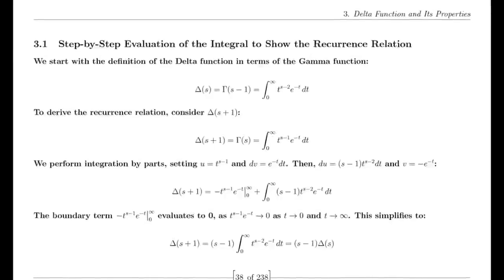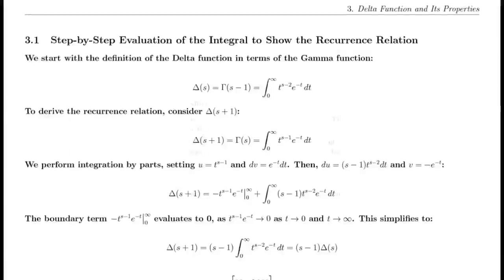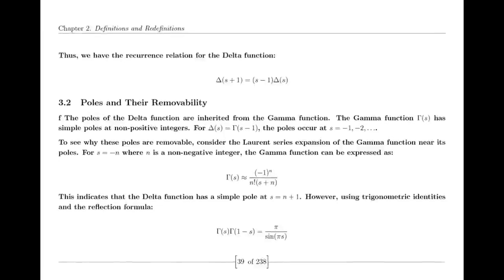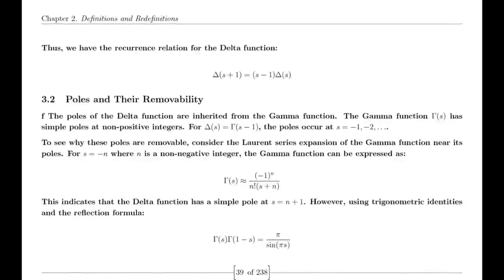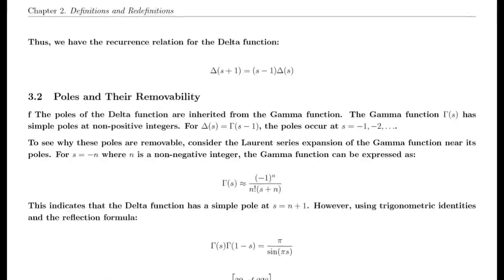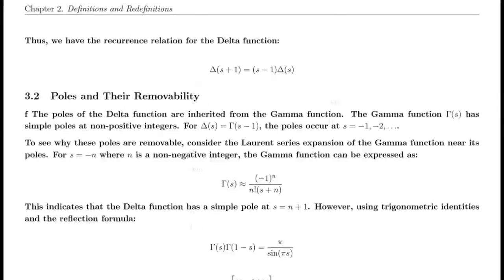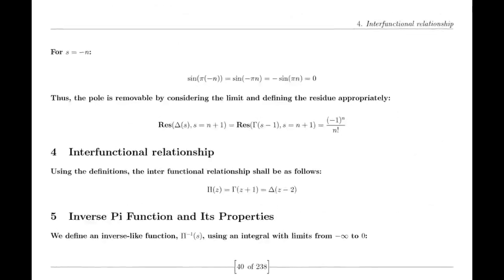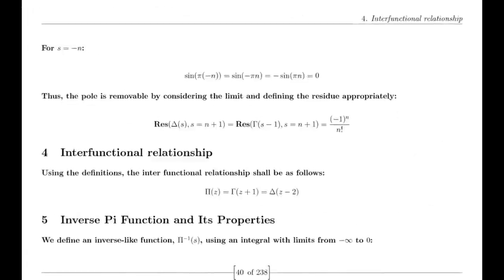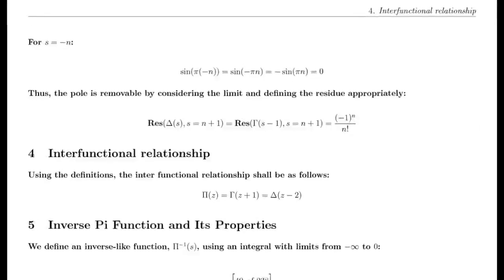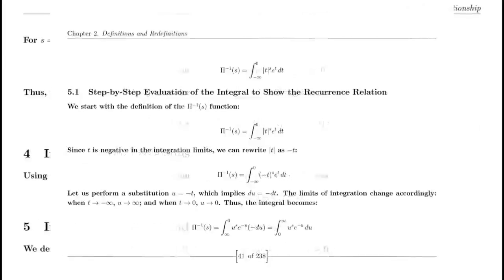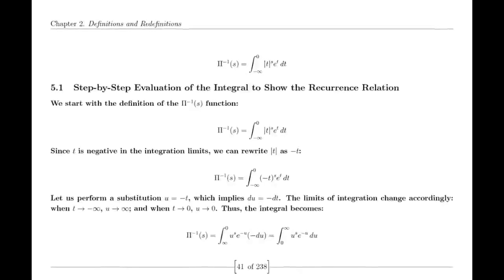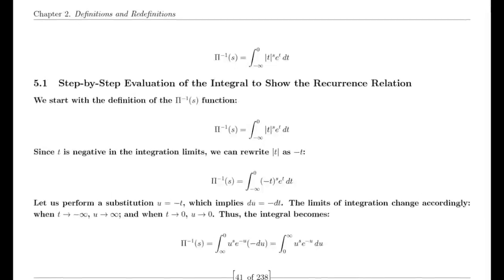Now let's try something different. Take a sufficiently large number, calculate its logarithm, and then divide the result by the logarithm of 2. You'll notice that you don't end up in a repeating decimal loop. Instead, you get a value that eventually resolves to 0, although the length of the decimal part may vary. This non-repeating property reflects a more profound mathematical behavior.